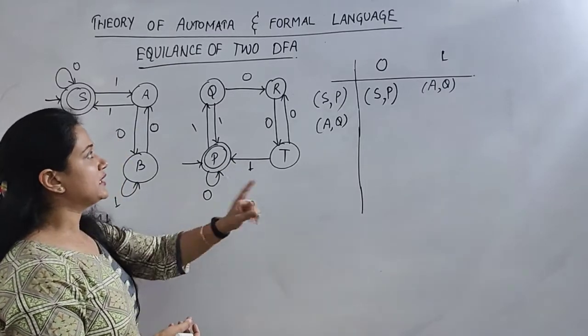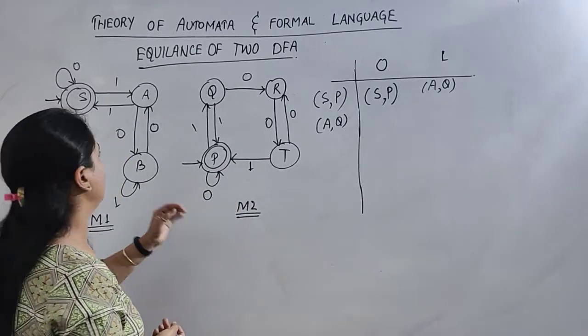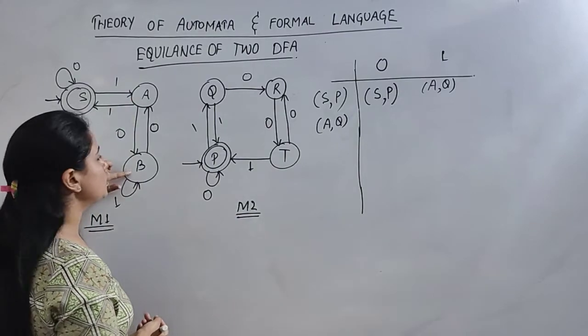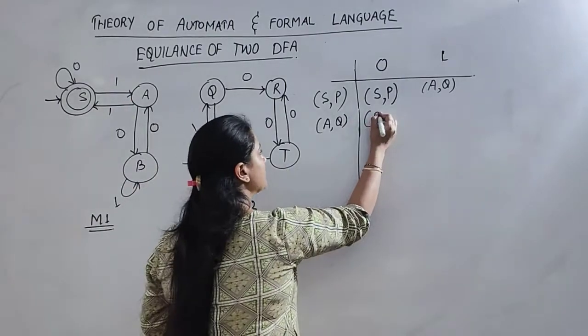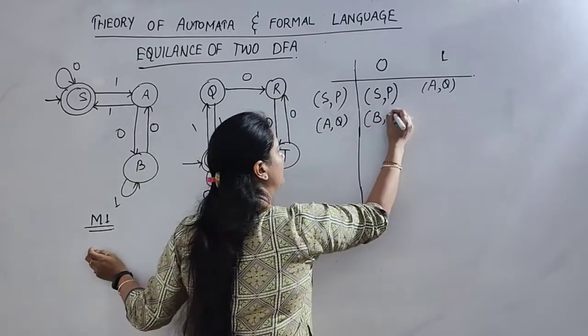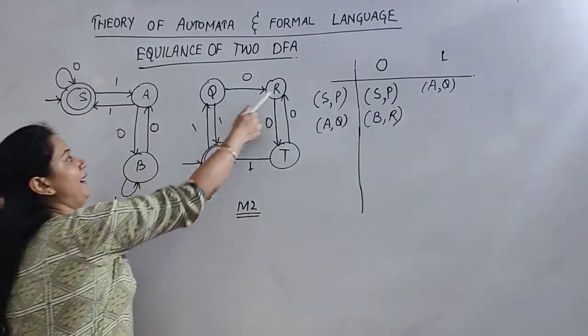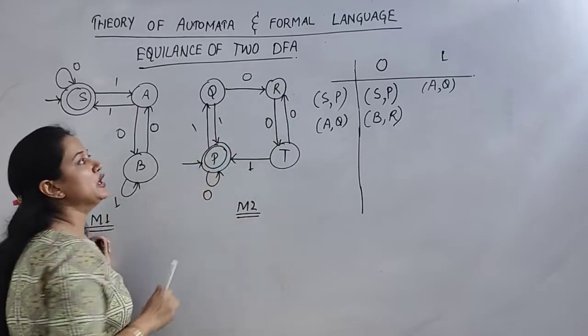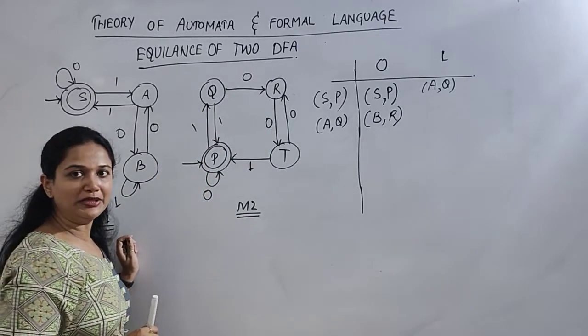So A and Q on zero input, where will we go? A on zero is going to B, therefore it is B. And Q on zero input is going to R, therefore it is R. B and R, both are non-final states, compatible states.